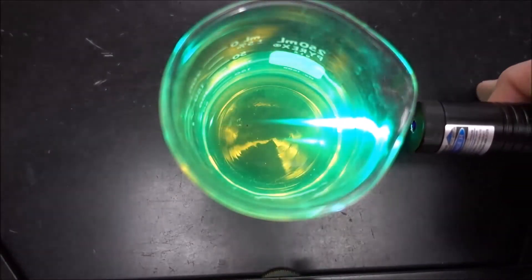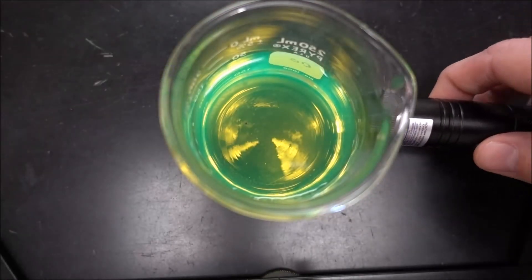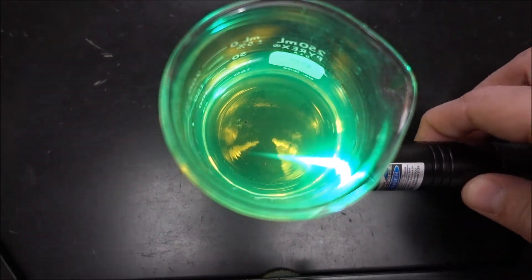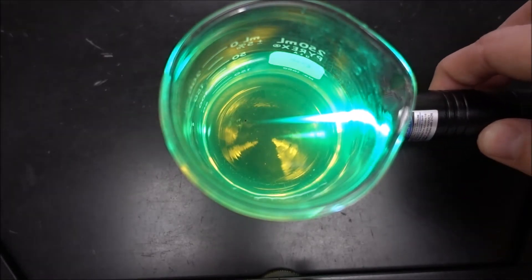Now let's see what it looks like when we shine a laser through them. Now with the yellow highlighter, you can see the solution is a little green. And when I shine the blue laser through it, it fluoresces green. It's strong, but doesn't seem to go all the way through.